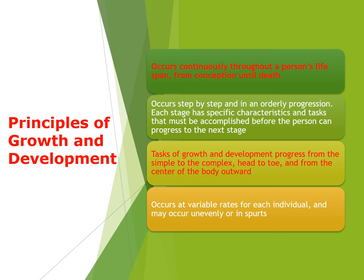Principles of growth and development: they occur continuously throughout a person's lifespan from conception until death, step by step in an orderly progression. Each stage has specific characteristics and tasks that must be accomplished before the person can progress to the next stage. Tasks progress from simple to complex, from the head to the toe, and from the center of the body outward, occurring at variable rates for each individual and sometimes unevenly or in spurts.